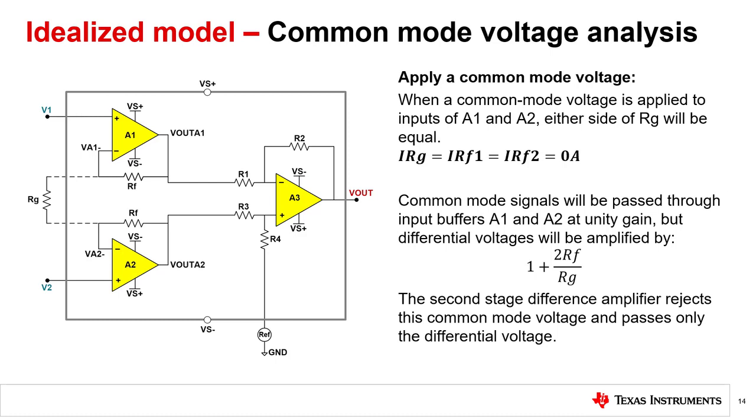Therefore, common mode signals will be passed through the input buffers at unity gain. But differential voltages will be amplified by the factor 1 plus 2RF over RG. The second stage difference amplifier rejects this common mode voltage and passes only the differential voltage as explained in a previous video.